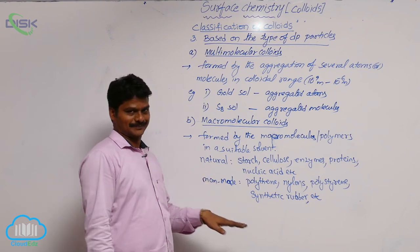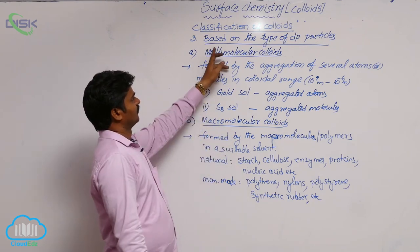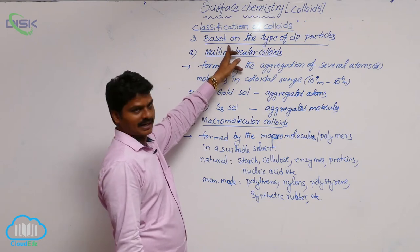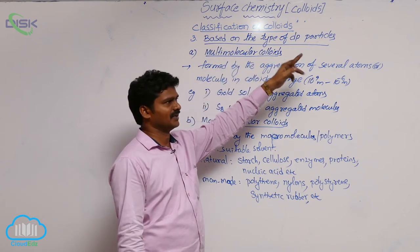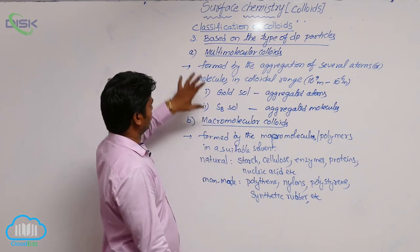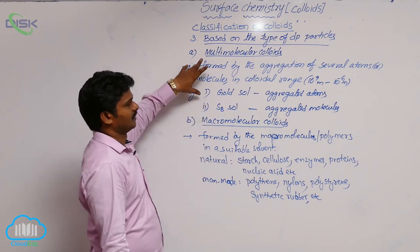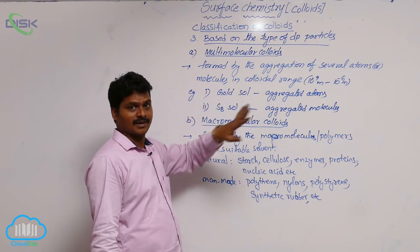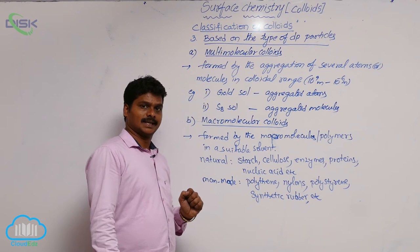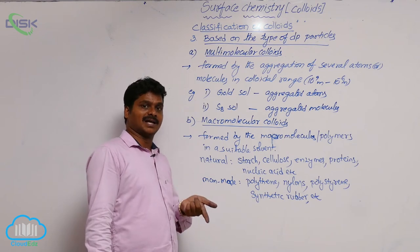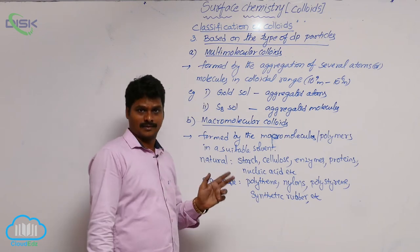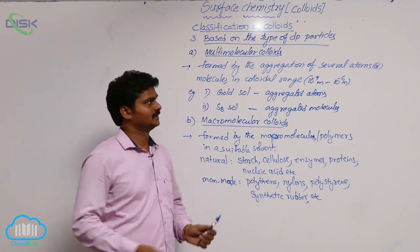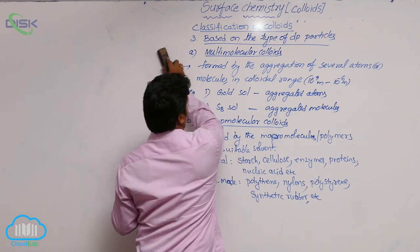So in summary for this classification: in the first type (multi-molecular colloids), aggregated atoms or molecules form the colloidal particle. In the second type (macromolecular colloids), each single high-molecular-mass molecule acts as a colloidal particle. Now let's see the third type — associated colloids.